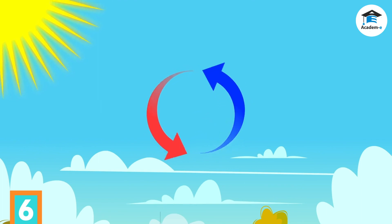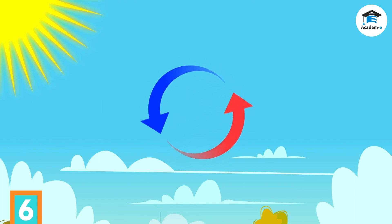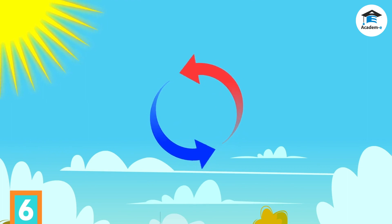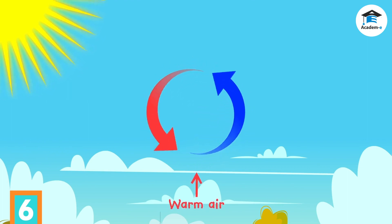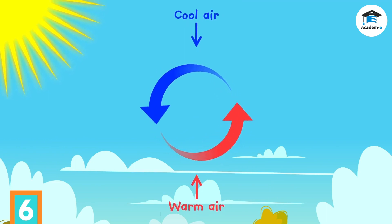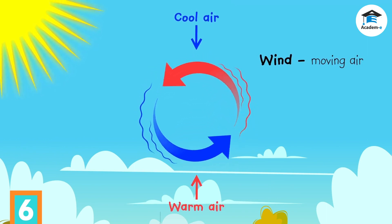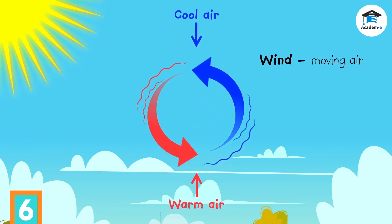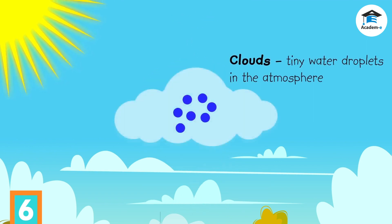Air in areas that are directly hit by the sun's rays gets warmer than the air in areas not directly hit by the sun's rays. This difference in air temperature causes air movement. Warm air, which is lighter, rises. Cool air, which is heavier, sinks. Moving air is what we call wind. When warm air rises, it cools. When the air cools, the water vapor in the air turns into tiny water droplets, or clouds.